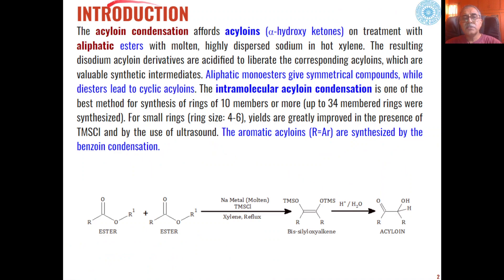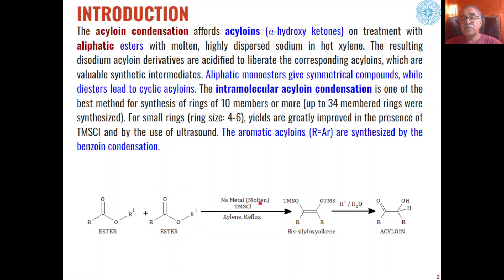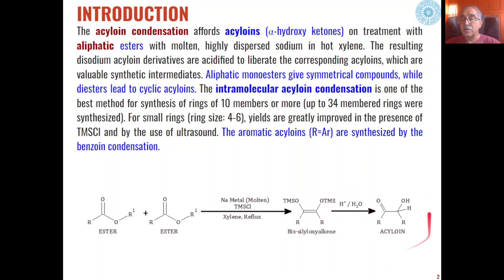Acyloin condensation is a process in which two molecules of an ester react with sodium metal in the molten state in presence of trimethylsilyl chloride to give bis-silyloxylkenes as intermediates. These intermediates on hydrolysis in presence of an acid are converted into acyloins, which are basically alpha hydroxy ketones — valuable synthetic intermediates used for different types of organic product synthesis.